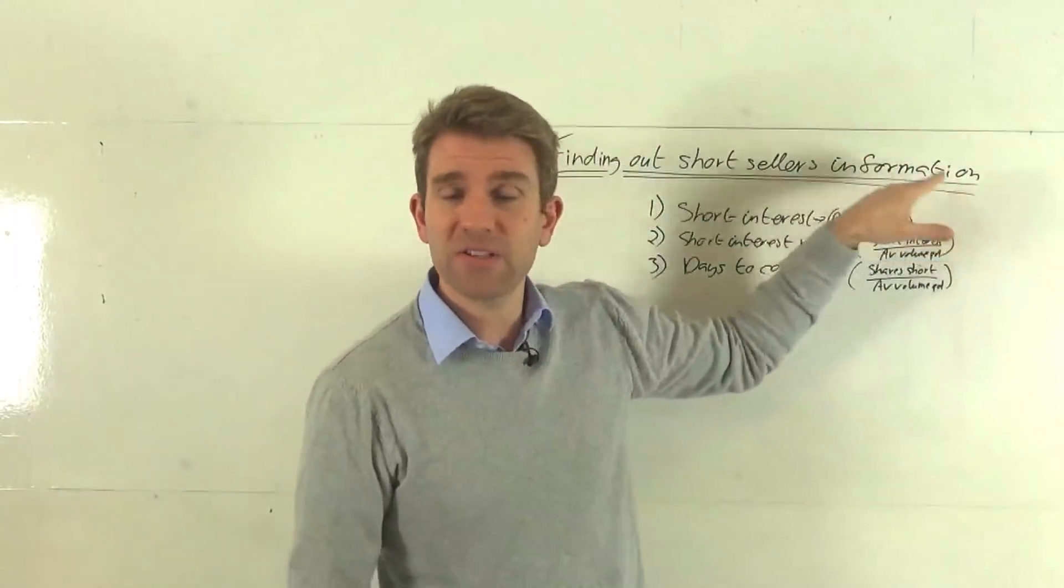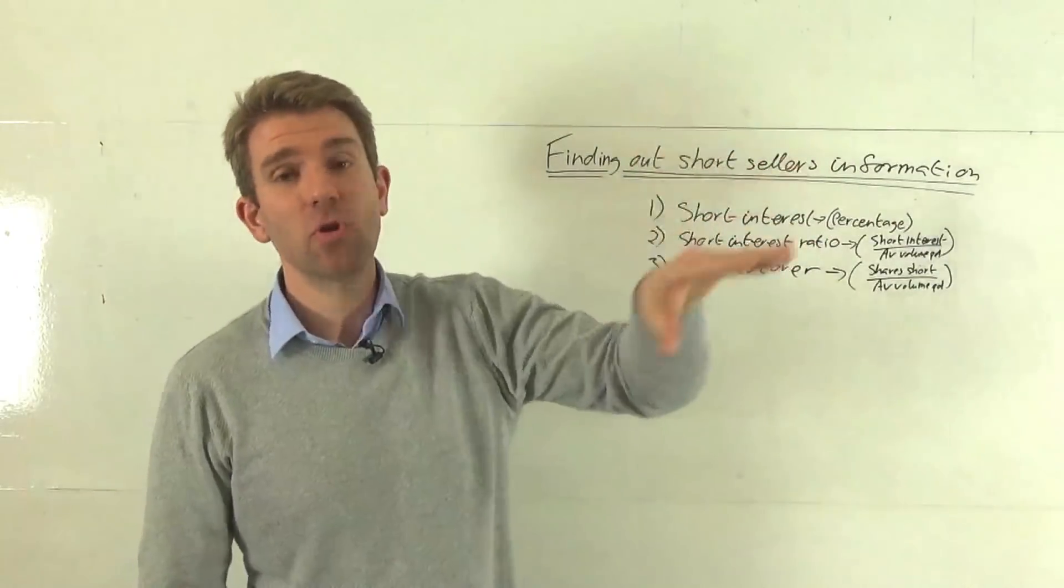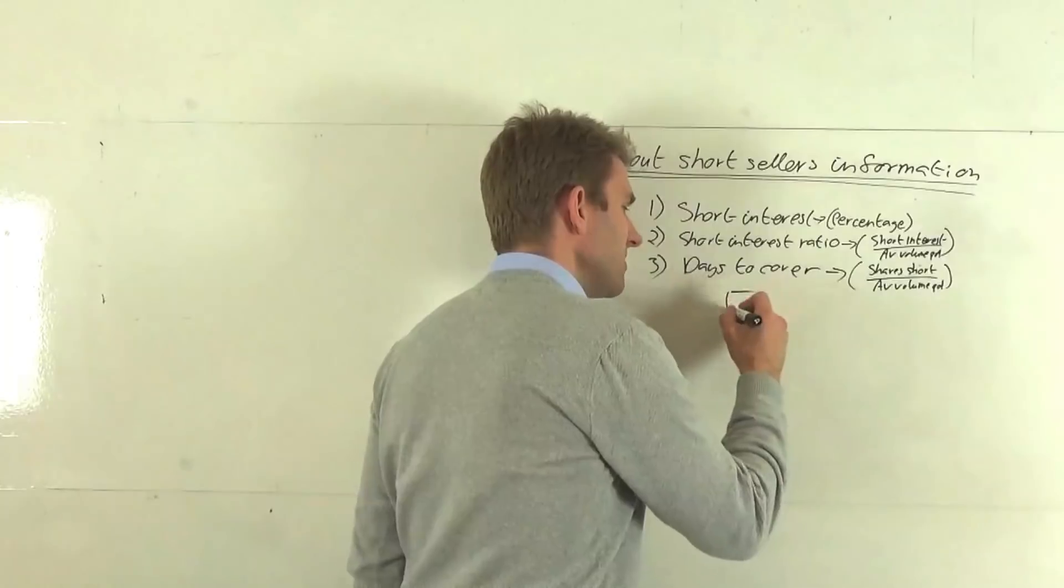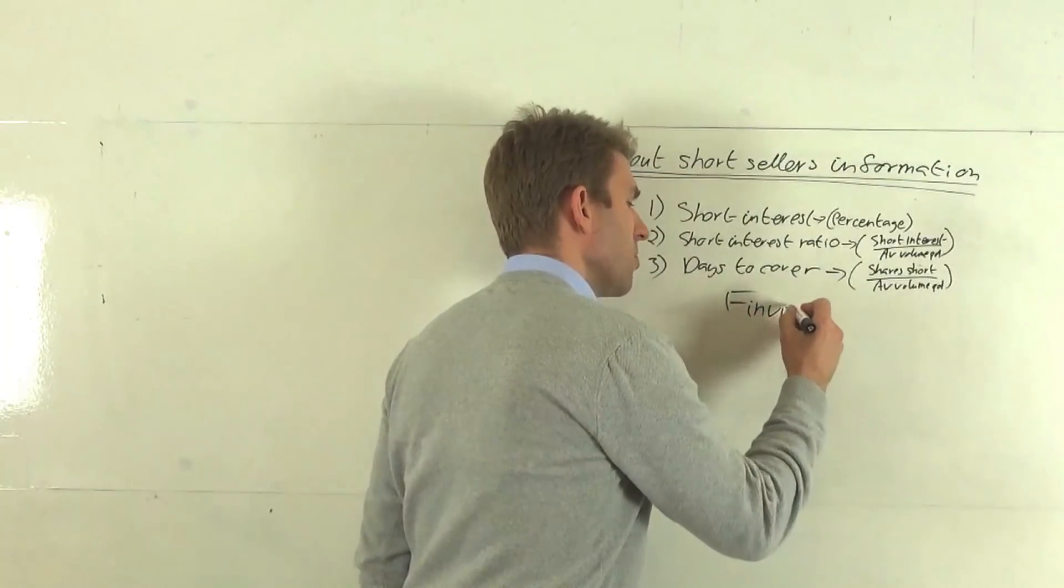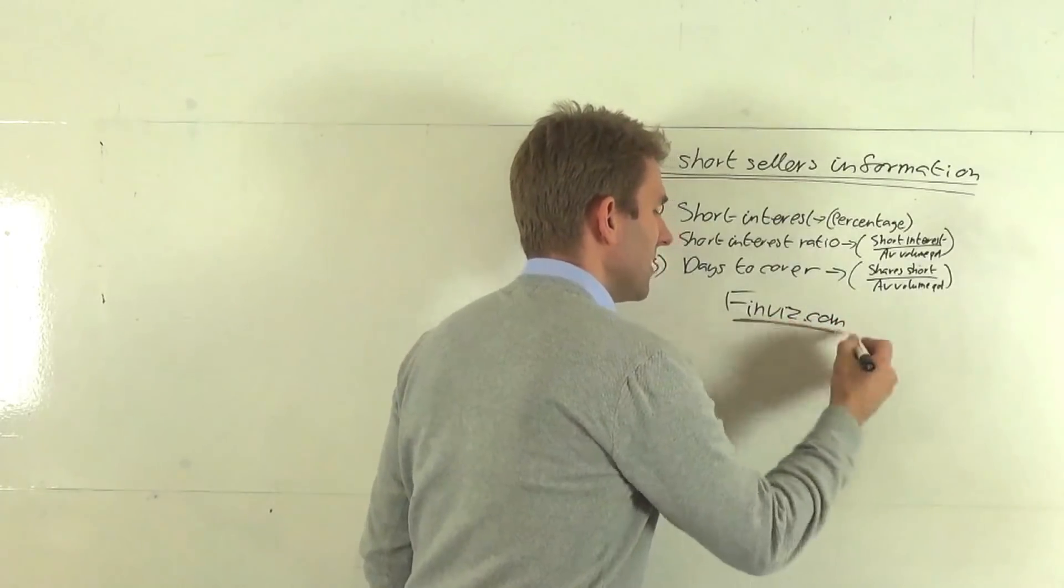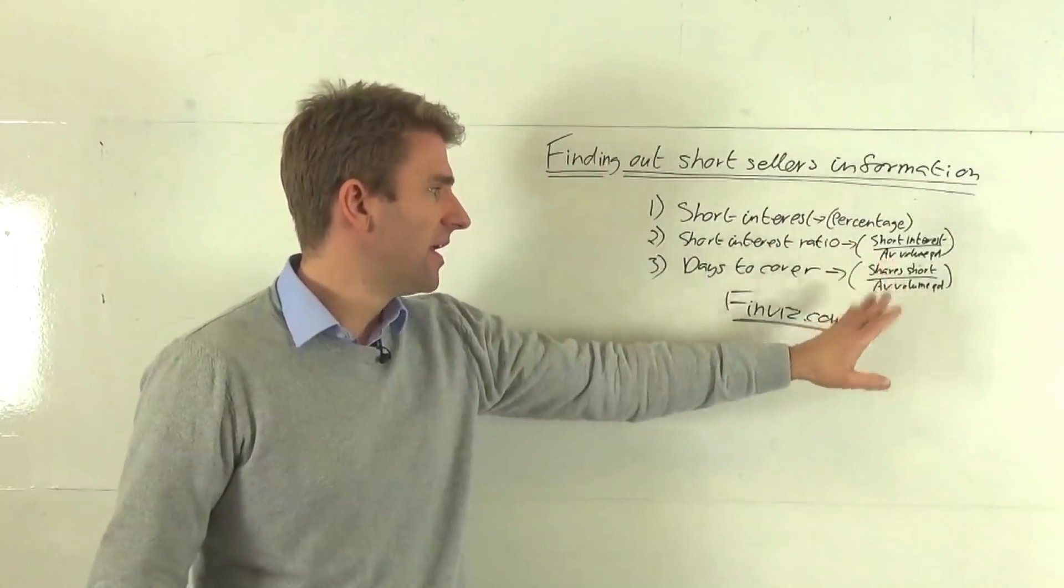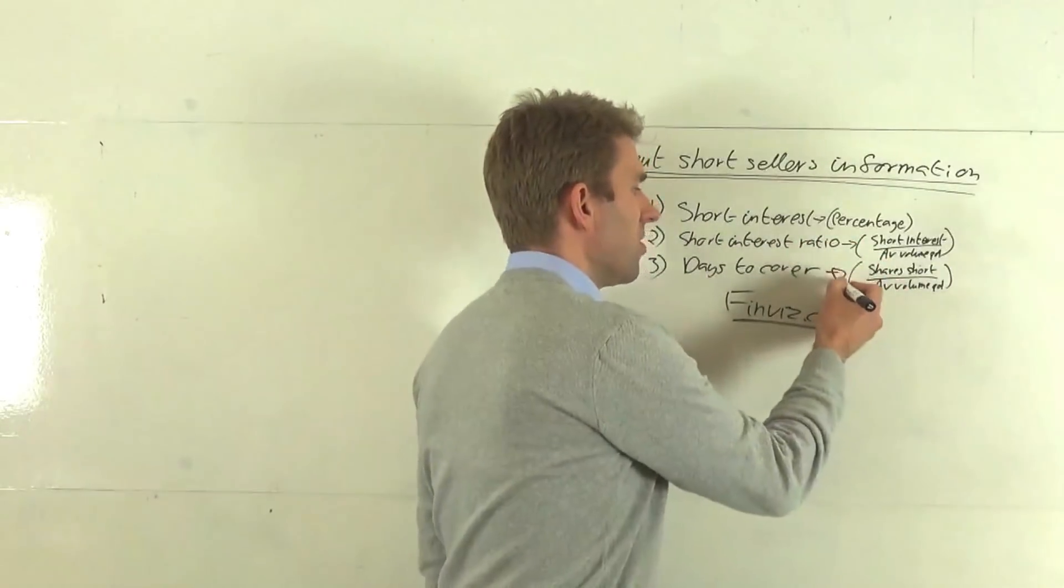We can get it directly from Nasdaq if it's on the Nasdaq, directly from the NYSE if it's on the NYSE. We get to charting companies or should I say websites that offer charts like finviz.com. That's my preferred place to get it. That gives you the short interest and you can work out the short interest ratio and days to cover if it's not on there if you don't have the premium.